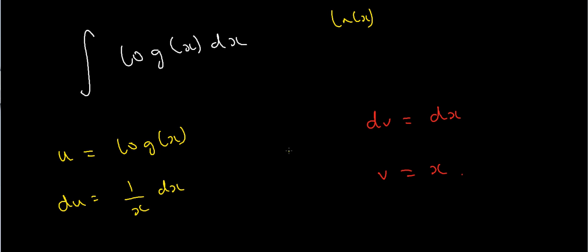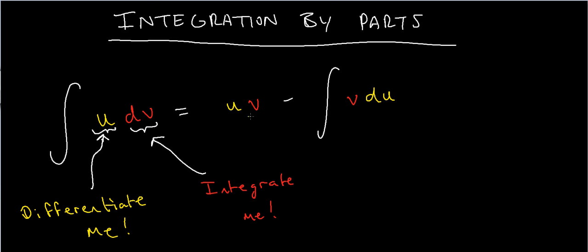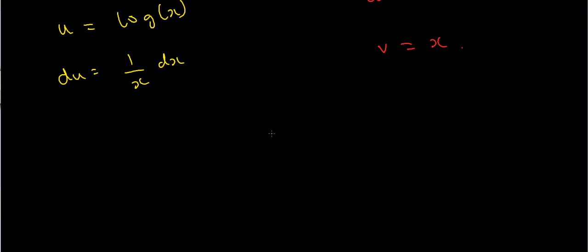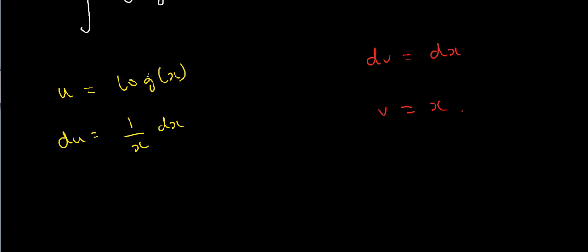Now the integration by parts formula says I've got to take u and multiply that by v, up here, uv. So what's uv? Well, uv is log x times x. Log x times x is x log x.